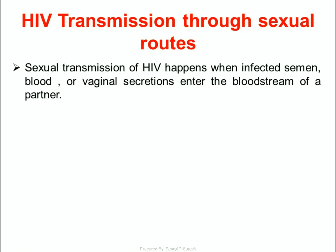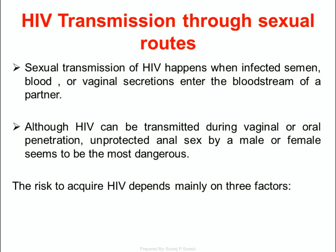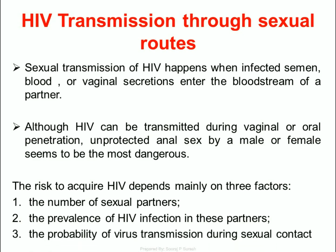HIV transmission through sexual routes: Sexual transmission of HIV happens when infected semen, blood, or vaginal secretions enter the bloodstream of a partner. Although HIV can be transmitted during vaginal or oral penetration, unprotected anal sex by a male or female seems to be the most dangerous. The risk of acquiring HIV depends mainly on three factors: (1) the number of sexual partners, (2) the prevalence of HIV infection in these partners, and (3) the probability of virus transmission during sexual contact.